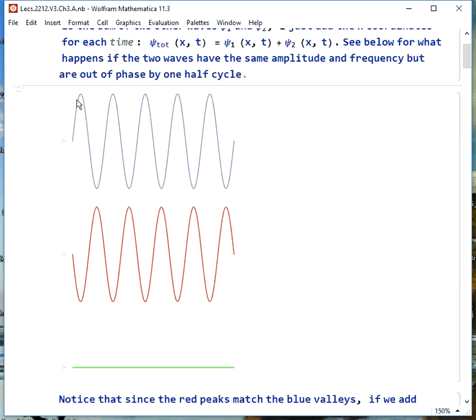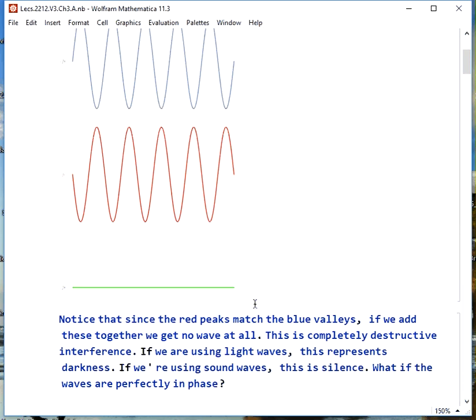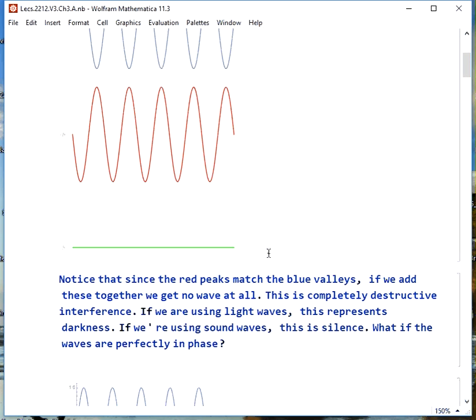For example, if we have two waves like the red and the blue here, same amplitude, same frequency, but they're out of phase by half a cycle so that the blue is hitting the max while the red is hitting the min, if I add those together, they'll exactly cancel out and we get nothing. That would mean silence if we're talking about sound or darkness if we're talking about light. This is called destructive interference.